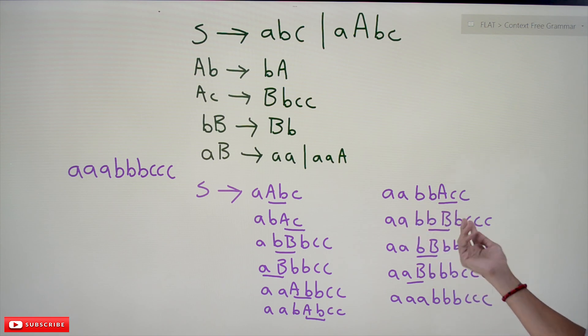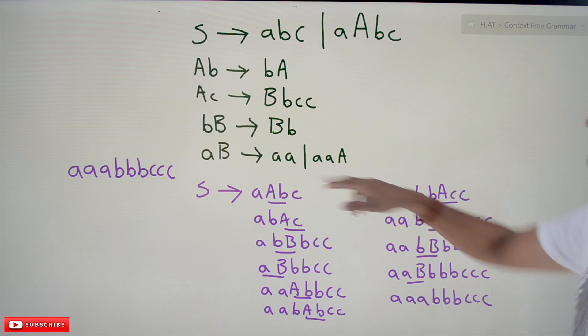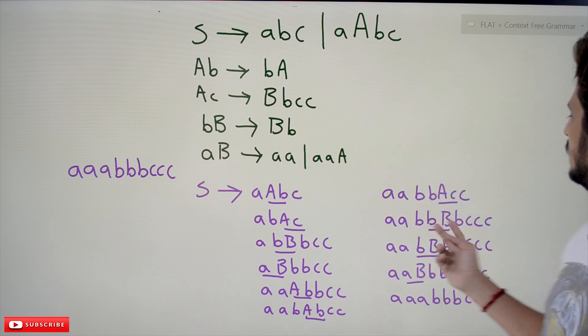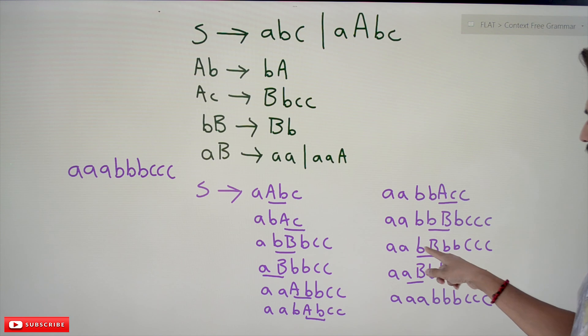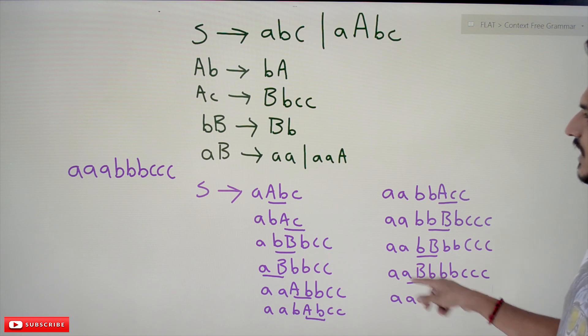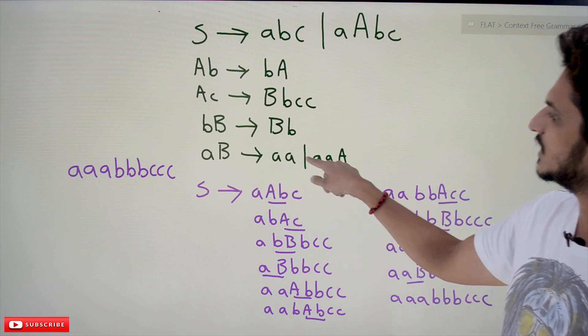bB can be written as Bb. We change it again. The next one, bB, can be converted to Bb. Now AB can be written as AA.